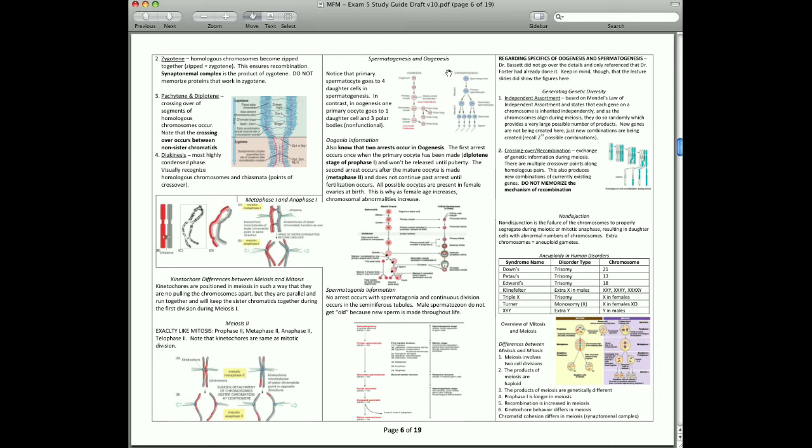That's gametogenesis. Gametogenesis is spermatogenesis and oogenesis. Basically, what's going on here, the differences. In oogenesis, you're going to have 1 original cell that matures into a single oocyte and 3 polar bodies. Also, there's 2 arrest cycles.